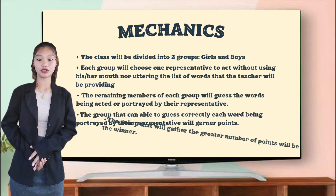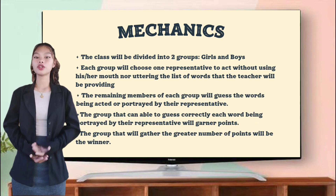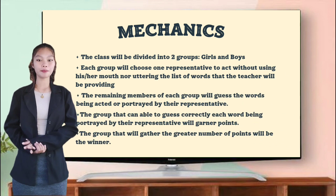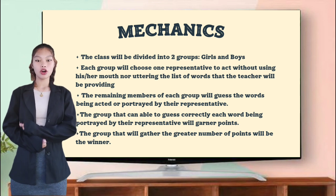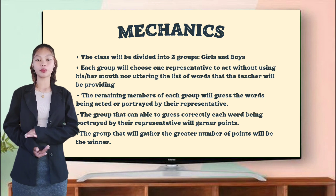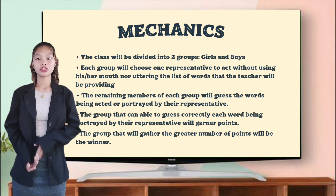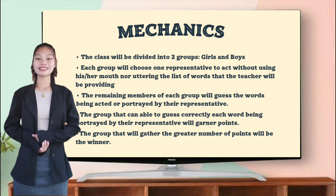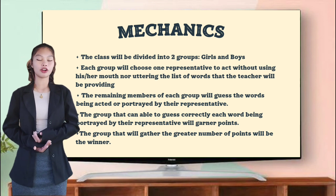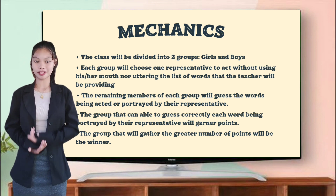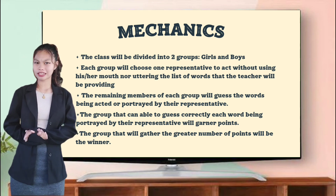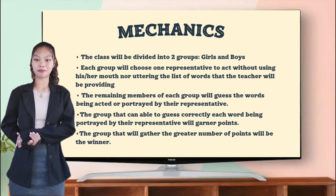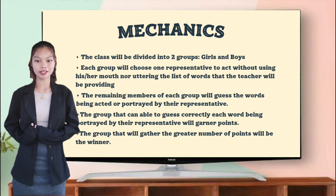So here's the mechanics. The class will be divided into two groups — the girls and the boys. Each group will choose one representative to act without using his or her mouth, nor uttering the words from the list I'll be giving. The remaining members of each group will guess the words being acted or portrayed by your representative. The group that can guess correctly each word portrayed by the representative will garner points.